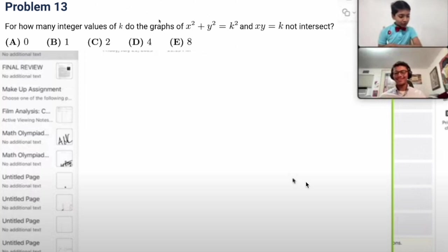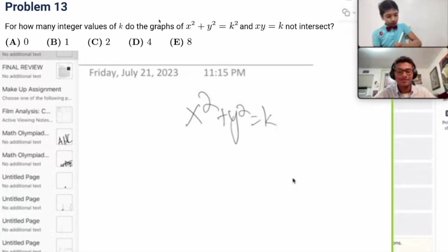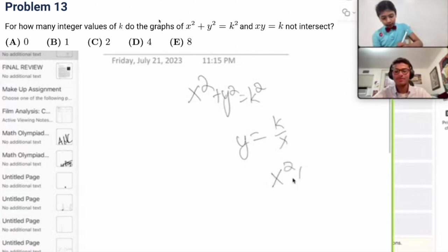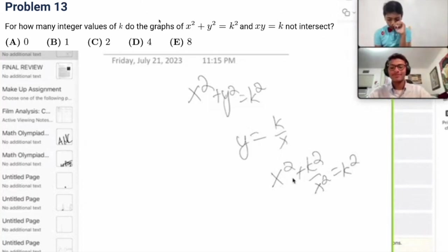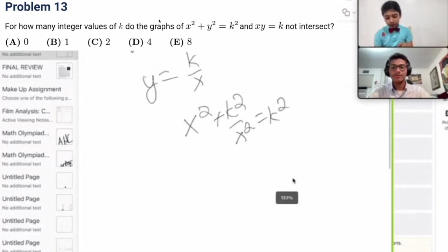So, there we go. x squared plus y squared equals k squared, so that's a circle with radius k, and y equals k over x. So, that means x squared plus k squared over x squared equals k. So, for how many integral values of k does this have zero solutions?